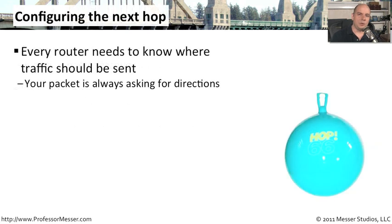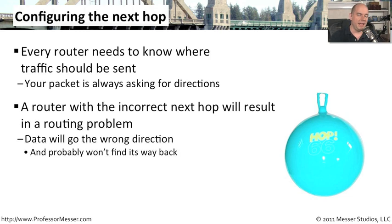At the very basic level, your router receives traffic and sends it to the next location — your router always needs to know where is the next hop. It often determines this automatically if you're using a dynamic routing protocol. Occasionally you have to manually configure this with a static routing protocol, where you configure where the next hop will be. If you put in the incorrect next hop, the traffic is not going to get to the right location — it will go in absolutely the wrong direction, potentially reaching another router that has no idea what to do with it and simply drops it.